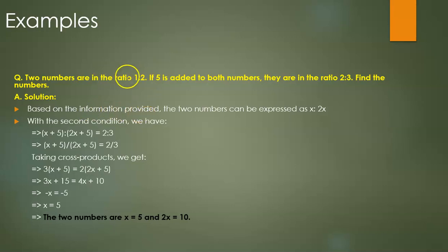Let's look at the first set of information that we have, which is that the two numbers are in the ratio 1:2. So the two numbers can be expressed as x and 2x.